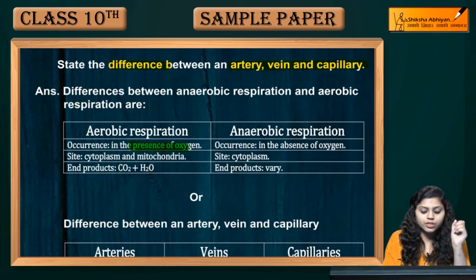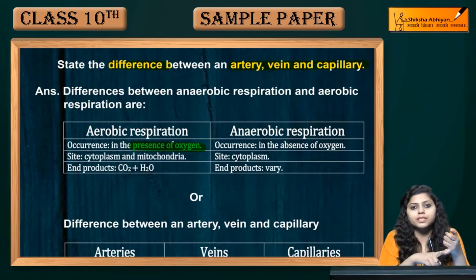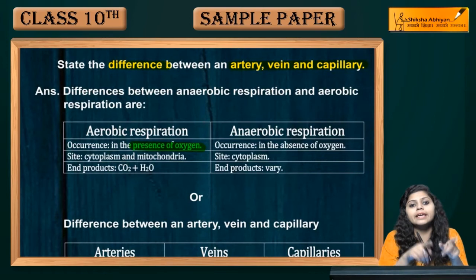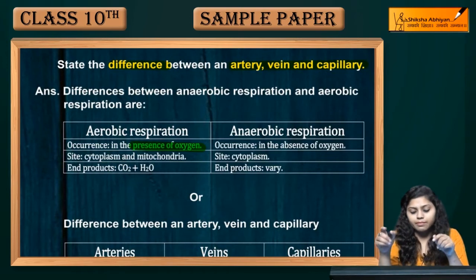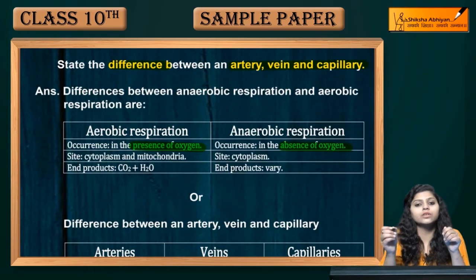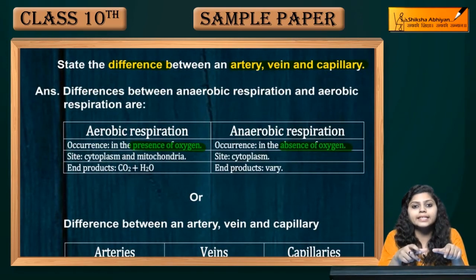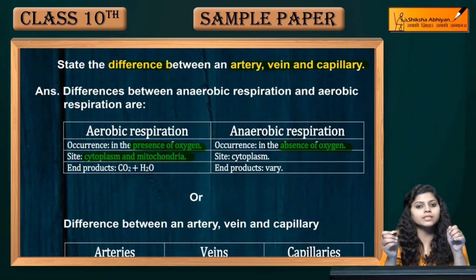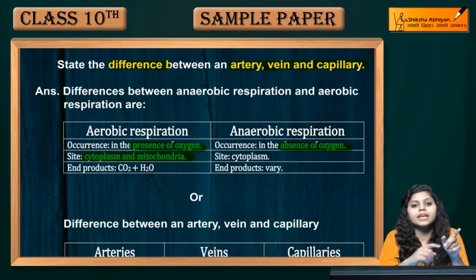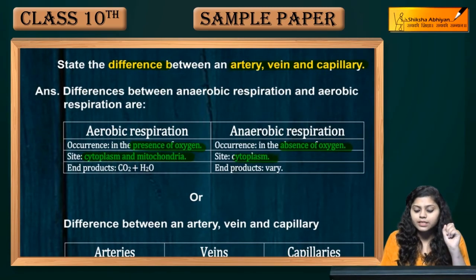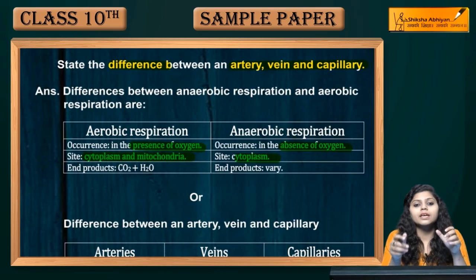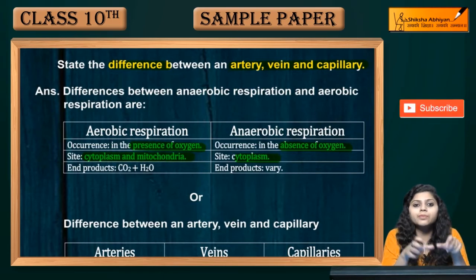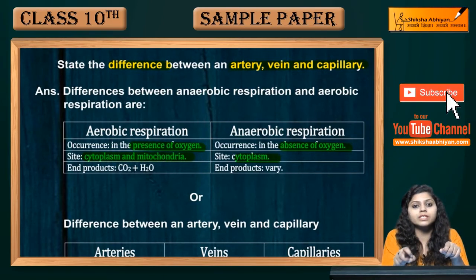Aerobic respiration occurs in the presence of oxygen, whereas anaerobic respiration does not require oxygen. The site of aerobic respiration is the cytoplasm and mitochondria, while anaerobic respiration takes place only in the cytoplasm.